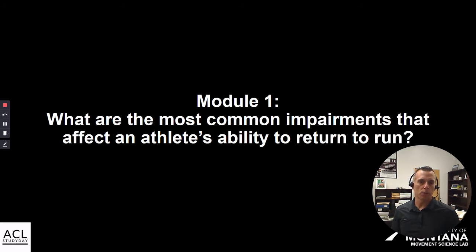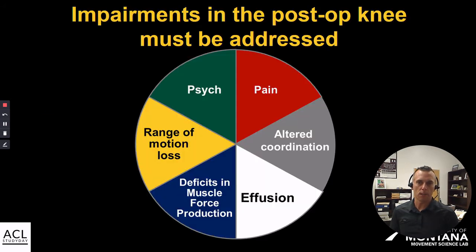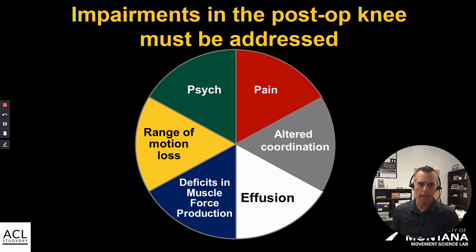In module one, we're going to talk about what are the most common impairments that can affect an athlete's ability with return to run. I want to give credit to my colleague at the University of Montana, Ryan Meisner, for laying the theoretical framework here. It's really important to understand that individuals recovering from a post-operative knee issue or even acute knee injury are going to be experiencing all of these impairments in varying degrees. Some athletes may experience more pain than others, some may have more trouble with deficits in muscle force production, and other athletes may have coordination issues.